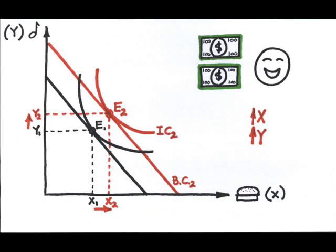Scenario 1. You get a raise. What's the result? This consumer chooses to buy more of both products X and Y, or food and music, yielding higher utility.